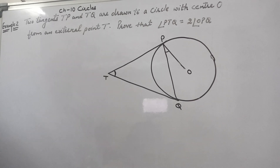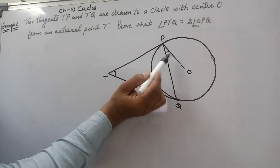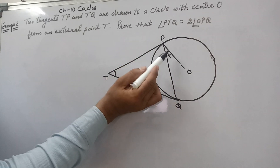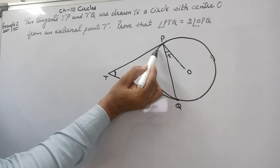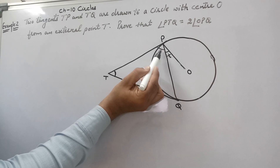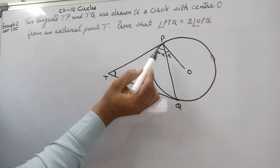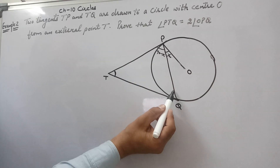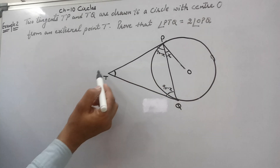Let's see how to approach this. First, suppose angle OPQ = x. We know the full angle OPT is 90 degrees, so if angle OPQ is x, then angle TPQ will be 90 minus x. Since TP is equal to TQ — because tangents from external points are equal — triangle PTQ is isosceles.